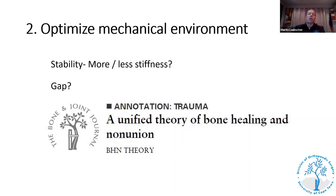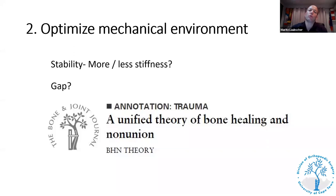The second key thing is optimizing the mechanical environment. There are really only two things you can manipulate: select a fixation construct that is more or less stiff than what was previously used, and manipulate the gap at the non-union site. The 'unified theory of bone healing' article summarizes the evidence on the influence of mechanics on bone healing.